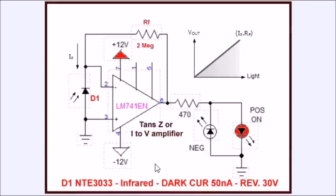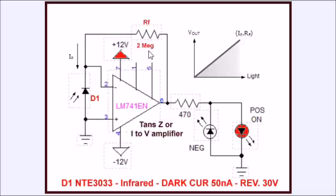Here we have connected the photodiode to an LM741 op-amp. This is a bipolar circuit — I'm using plus and minus 12 volts. I connect the photodiode between the negative input and ground, and the positive input also goes to ground. The leakage current IP also passes through RF, the feedback resistor. By adjusting this feedback resistor I can control the voltage output. As shown, the voltage out is equivalent to IP times RF.